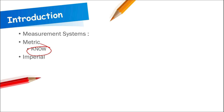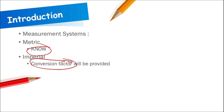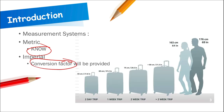We also have the imperial system — pounds, ounces, inches, feet, etc. For imperial conversions, a conversion factor will be provided. For example, a suitcase might show dimensions in both centimeters and inches depending on the country. You'll need to be able to convert from the metric system to the imperial system and vice versa.